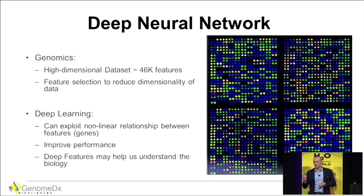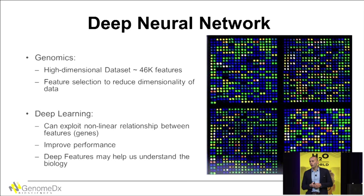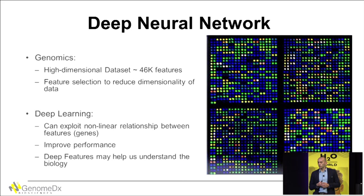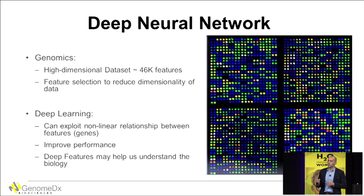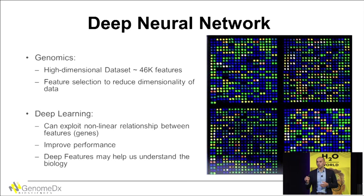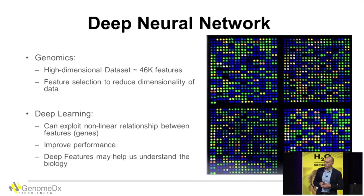An example of the images we get from our microarray scanners: each pixel corresponds to the expression of a gene. Coming from a computer vision and image processing background, I thought convolutional neural nets would be useful and that I wouldn't need to do feature engineering. However, the images from the scanners are a little different — pixels are not correlated because genes are placed on the microarray randomly, so we can't extract any spatial information. We also have around 46,000 features, one per pixel, making it very high-dimensional, so we have to reduce this dimensionality.